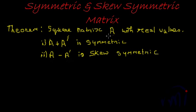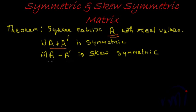If you are given a square matrix A with real values — what is a square matrix? A square matrix is a matrix which has the same number of rows and columns, equal number of rows and columns. So, if we are given a square matrix A, then the theorem states that A plus A transpose would be symmetric and A minus A transpose would be skew symmetric.